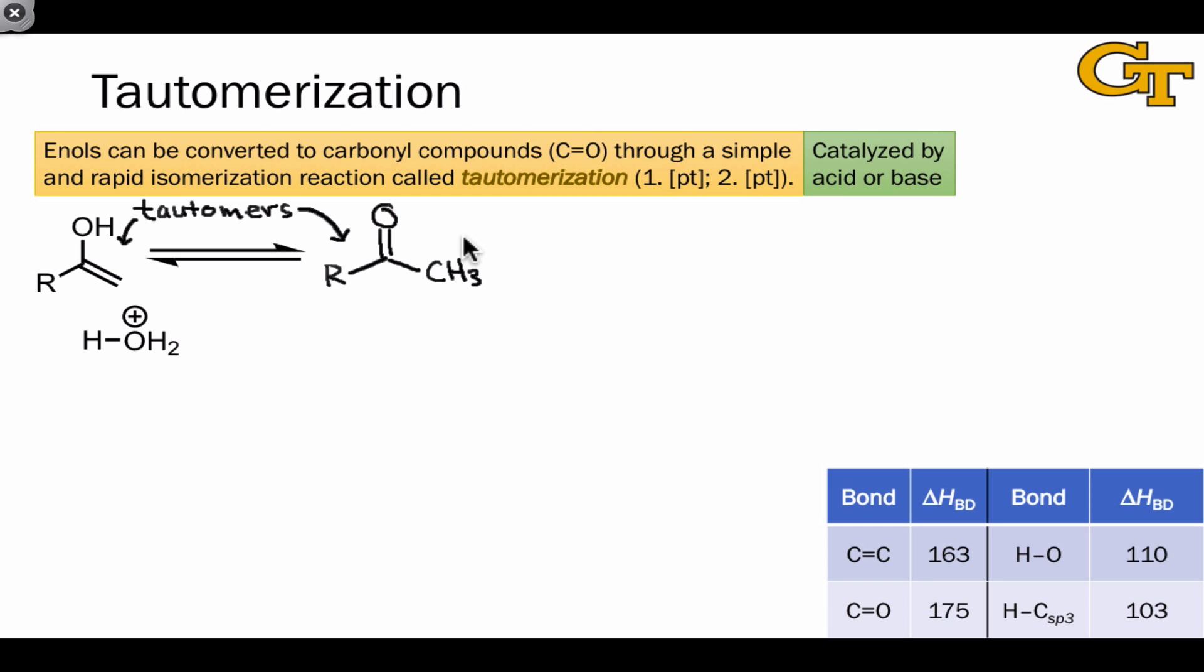Let's start by looking at the mechanism. Tautomerization does not involve the internal migration of a hydrogen atom from oxygen to carbon. Instead, it has to be catalyzed by either acid or base. We're going to focus on acid catalysis here, since acid-catalyzed hydration is a very important context for tautomerization.